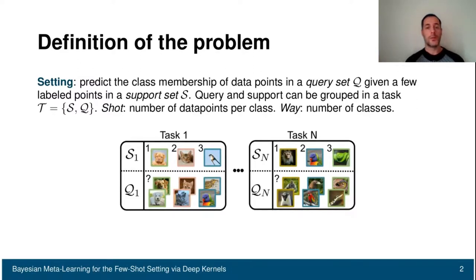Here you can see two examples. We have task 1 and task n. In both cases, we have a support. You can see that here we have just one image per class. It means that we are in the one-shot, three-way setting.